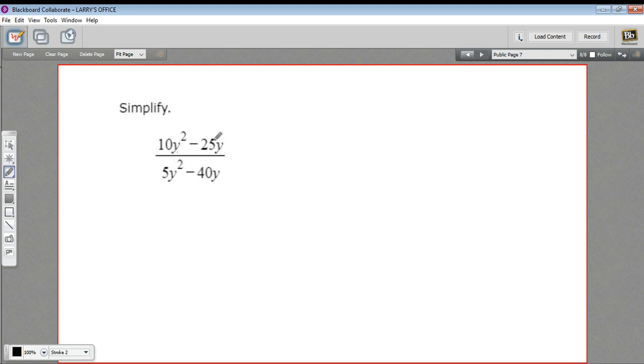I think the first thing to do is just take the top and the bottom separately and see what you can factor out. So 10y squared and negative 25y, let's see, they both have a 5 and a y in them. So let's just factor out a 5y first. So this would leave 2y minus 5. So I've just factored out 5y from each of these terms.